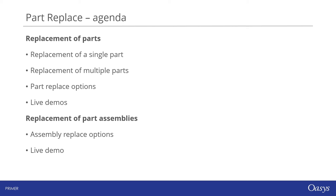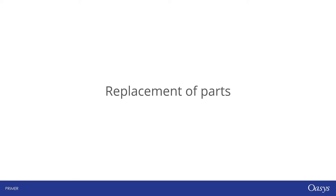A quick look at the agenda for today. We'll begin by looking at replacement of parts, whether that's a single part or multiple parts. We'll then look at the options available with the part replace tool and how these can be adapted to project-specific needs, wrapping up the first section with a couple of live demos. The second section concerns the replacement of part assemblies, and we'll look at the options that come with assembly replace and finish with a live demonstration.